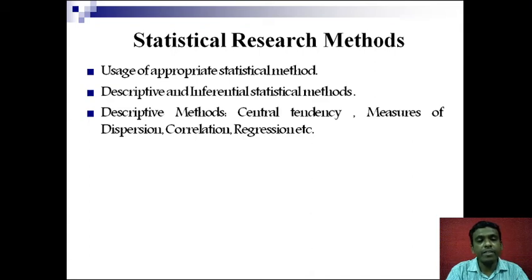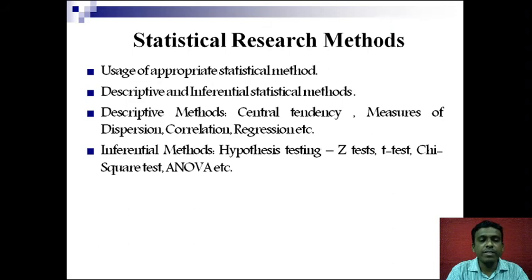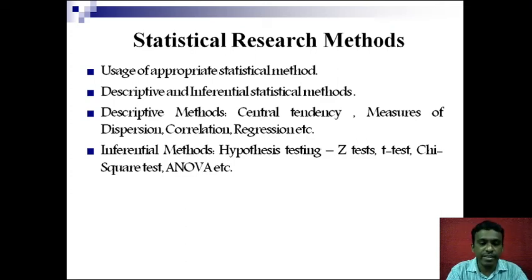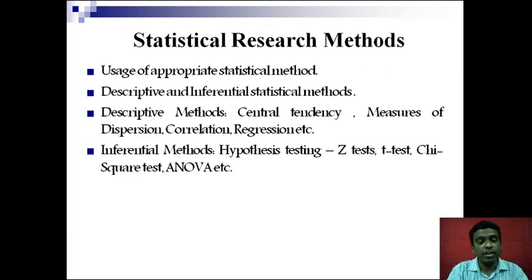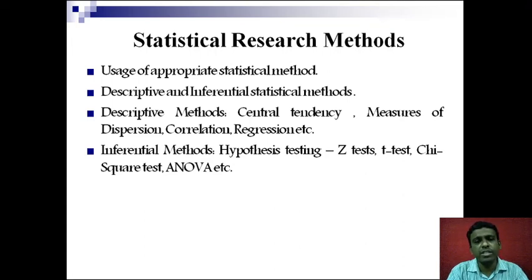The other part is the inferential statistical method. As I said, we try to infer something about the population based upon the sample data. Inferential methods basically include hypothesis testing, and in that we have already seen Z test, T test, Chi-square test, and some other tests which we have not seen include ANOVA and MANOVA. There are a lot of methods available in statistics that you can use for statistical analysis of your research.